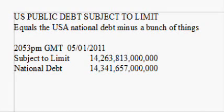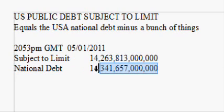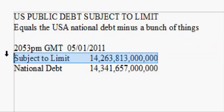Hello, this is the 1st of May 2011. If you've been to the National Debt Clock's web page recently, you may have found a section that says 'US public debt subject to limit.' It equals the national debt minus a bunch of different things. If you look at the national debt — 14.341 — it's a little over the debt ceiling, which is why this subject-to-limit figure exists.